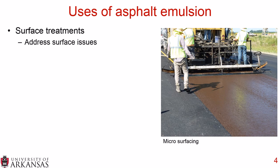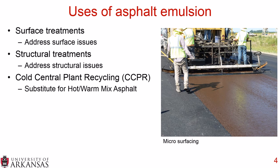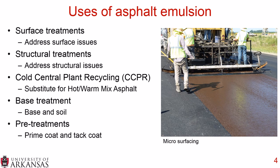Uses of asphalt emulsion include surface treatments, which address surface issues, and structural treatments, which address structural issues. Cold central plant recycling, or CCPR, can be used as a substitute for hot mixed asphalt or warm mixed asphalt. Base treatments are asphalt emulsion modified base courses and soil. And there are several pre-treatments, including prime coats and tack coats.